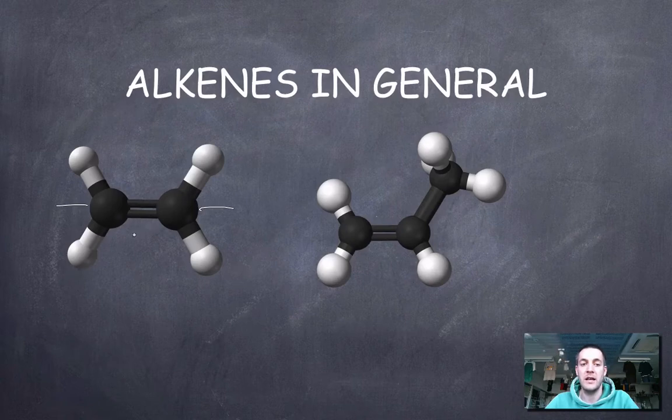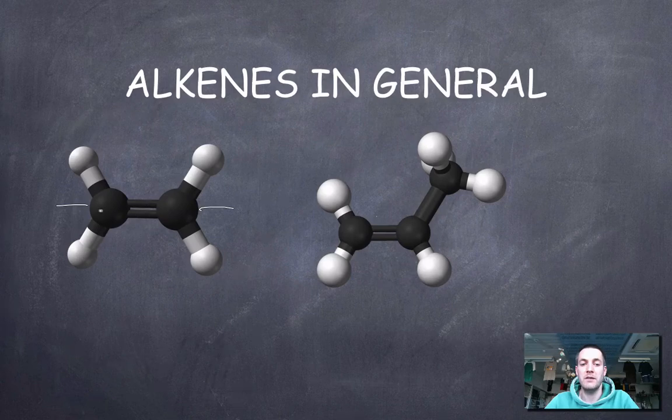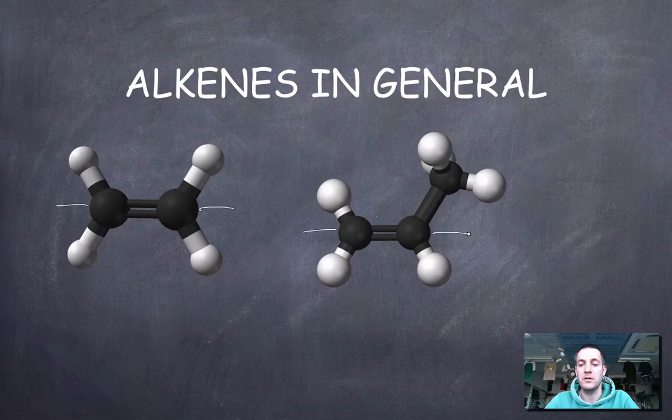So things that like electrons will come and attack. Electrons can make bonds. This double bond can break, but leaving these two carbons attached. And then we've got spare bonds to attach to. So that's why alkenes are going to react with things.